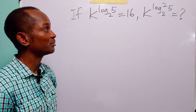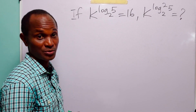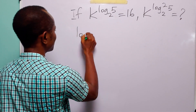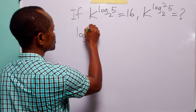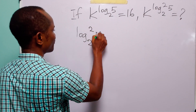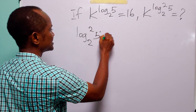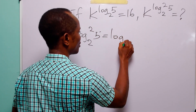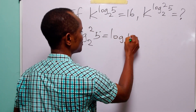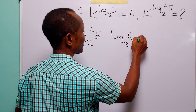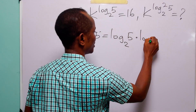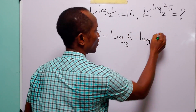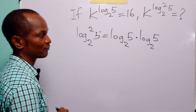Before we begin, note that log₂²(5) is simply equal to log₂(5) multiplied by log₂(5).